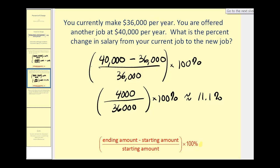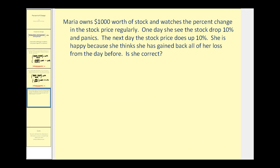Now there's one more thing I want to discuss. Maria owns $1,000 worth of stock and watches the percent change regularly. One day she sees the stock price drop 10 percent and panics. The next day, the stock price goes up 10 percent. She is happy because she thinks she has gained back all of her loss from the day before. Is she correct? It may seem that if it drops 10 percent and then increases 10 percent, the net change would be zero. Let's take a closer look.